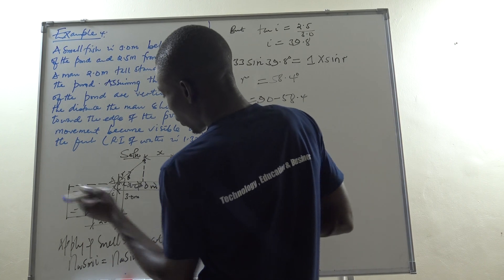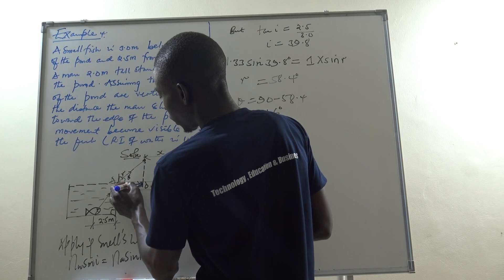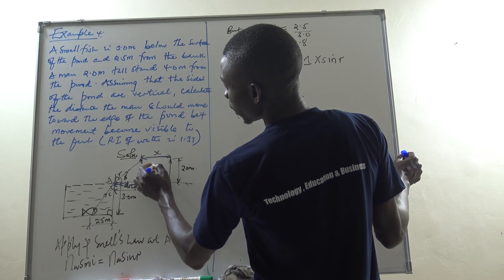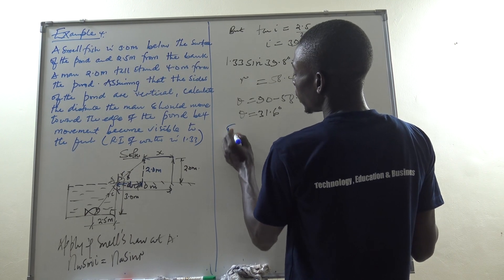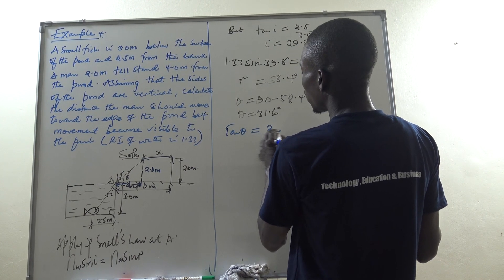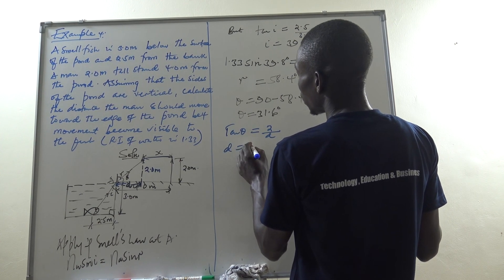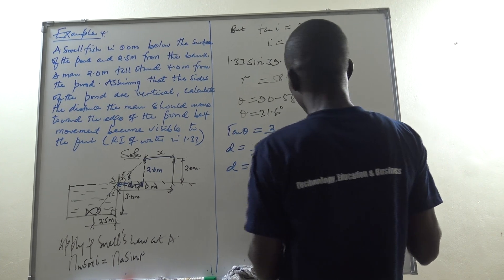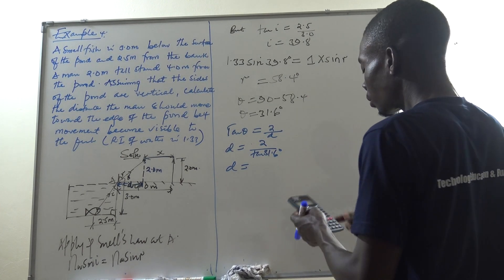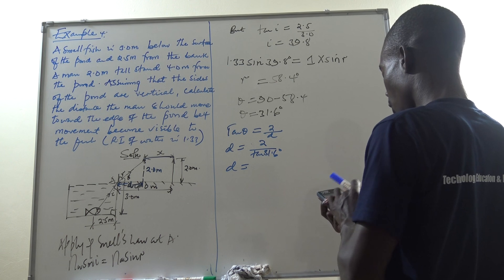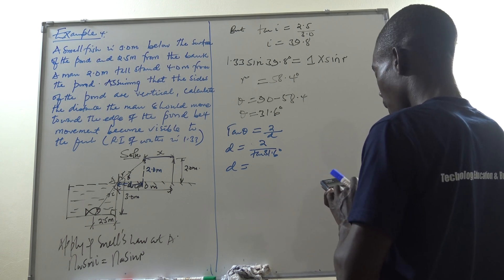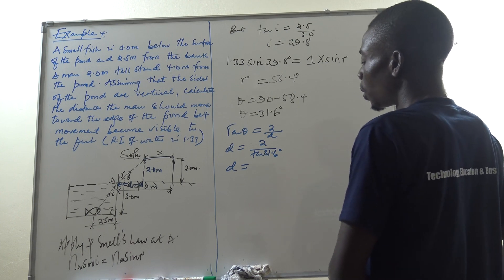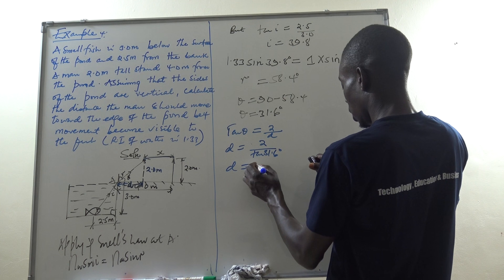Now I can find the horizontal distance d — the distance from the bank edge to the point directly below the man's head at the critical position. Since the man's height is 2.0 meters, I use tan(theta) = opposite over adjacent: tan(31.6°) = 2.0 / d. Therefore, d = 2.0 / tan(31.6°), and calculating this gives d = 3.25 meters.